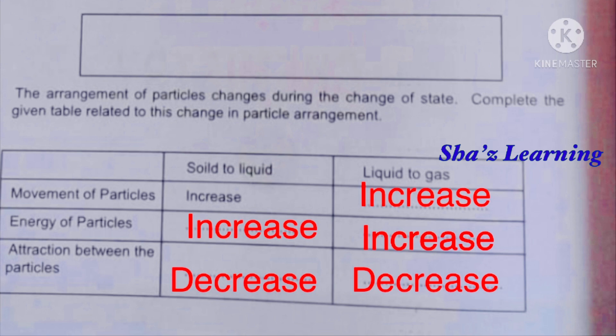Energy of particles increases. Next, the attraction between the particles decreases. Because the movement is increasing and the gap is increasing, so the attraction between the particles is decreasing.